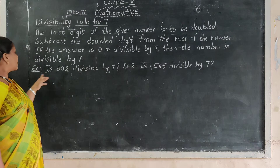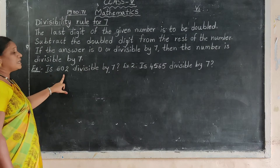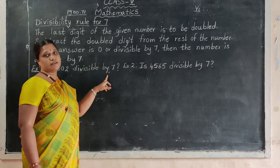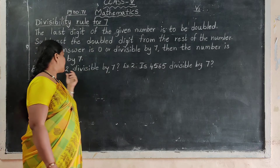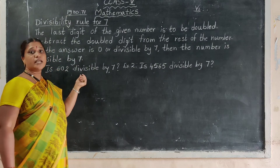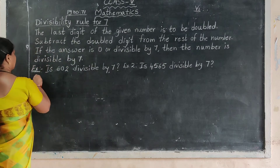Now see — is 602 divisible by 7? 602 is divisible by 7 or not, let's see.